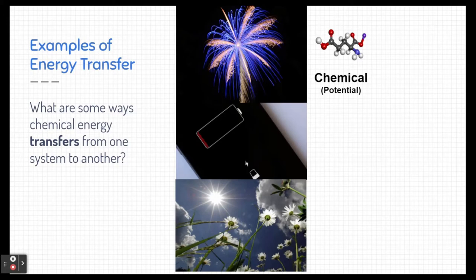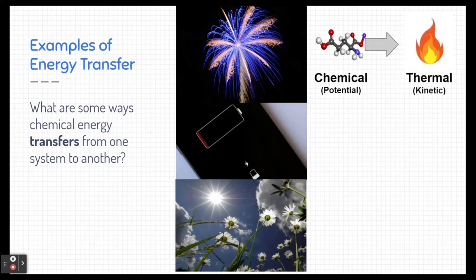Now when we light that gunpowder on fire, it explodes out in a marvelous array of thermal energy, and that energy is kinetic energy. That potential energy gets released in the form of kinetic energy, and all that heat gets dissipated to its surroundings. So our system is the firework, and the surroundings is all of the air and light and everything that gets shot outwards.